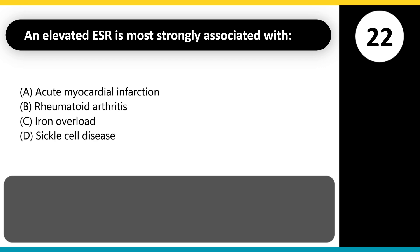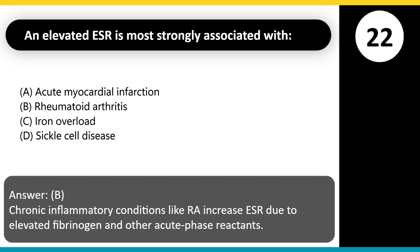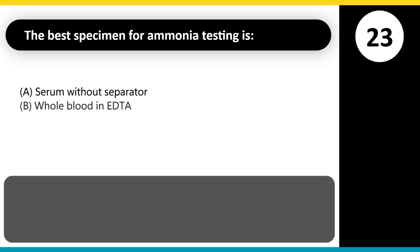An elevated ESR is most strongly associated with: A. Acute myocardial infarction. B. Rheumatoid arthritis. C. Iron overload. D. Sickle cell disease. Answer: B. Chronic inflammatory conditions like RA increase ESR due to elevated fibrinogen and other acute phase reactants.